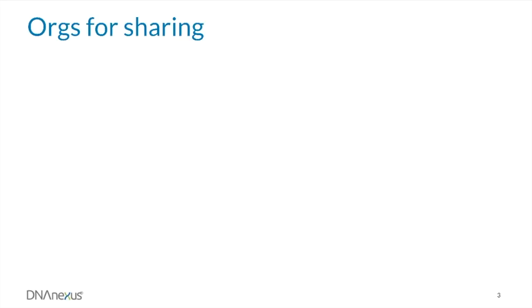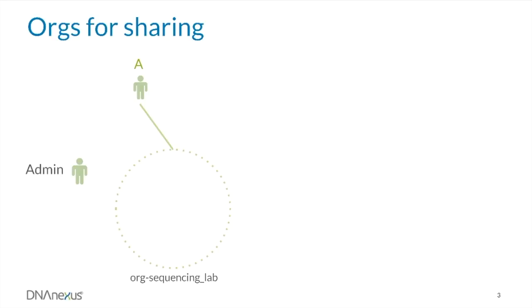Instead of sharing a project with several individual users or giving individual users access to an app, you can instead share with an org. In the following example, we have a hypothetical org called Org Sequencing Lab. This org is represented by the green circle in this diagram. The org currently has one member, the org admin, represented by the green person labeled A.